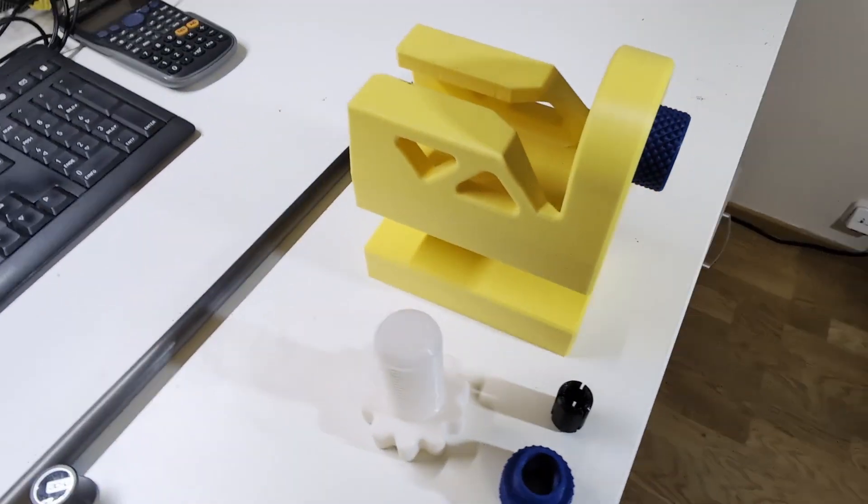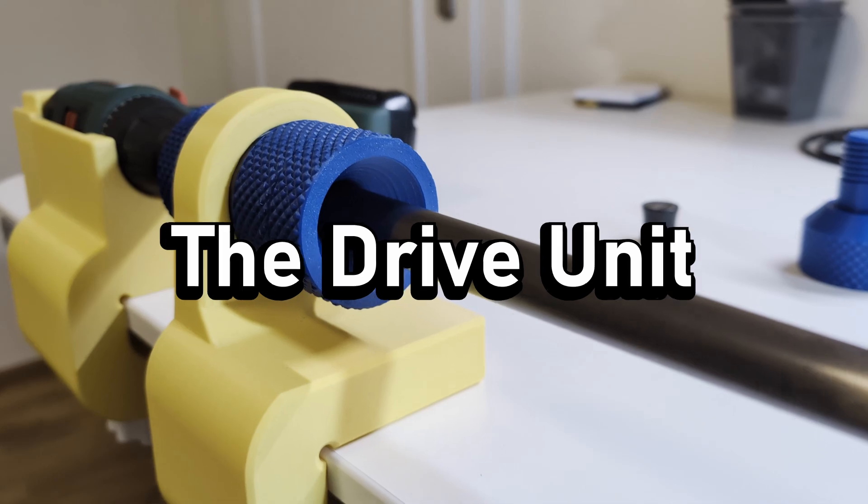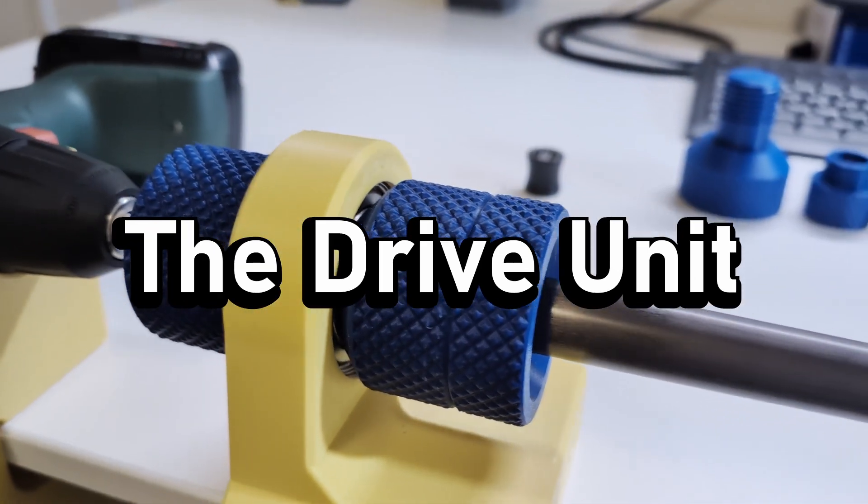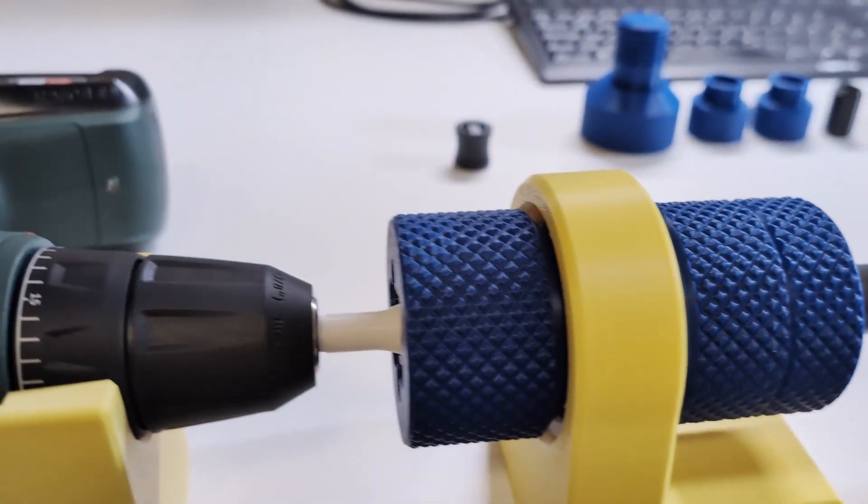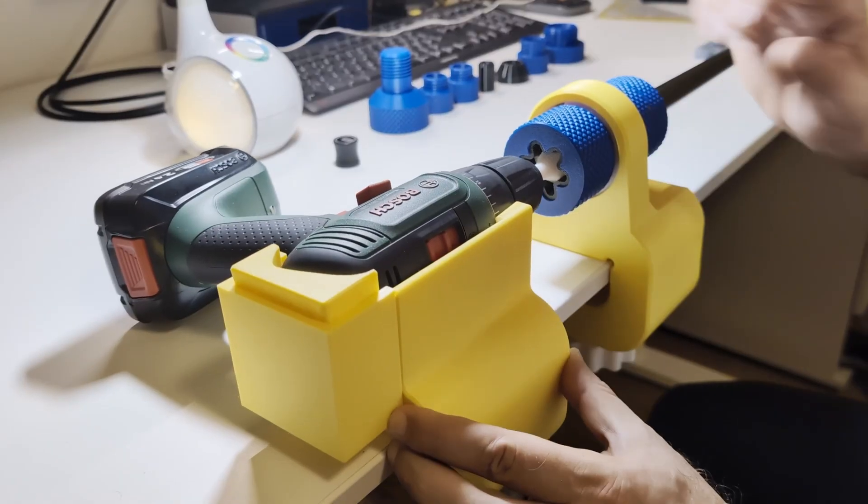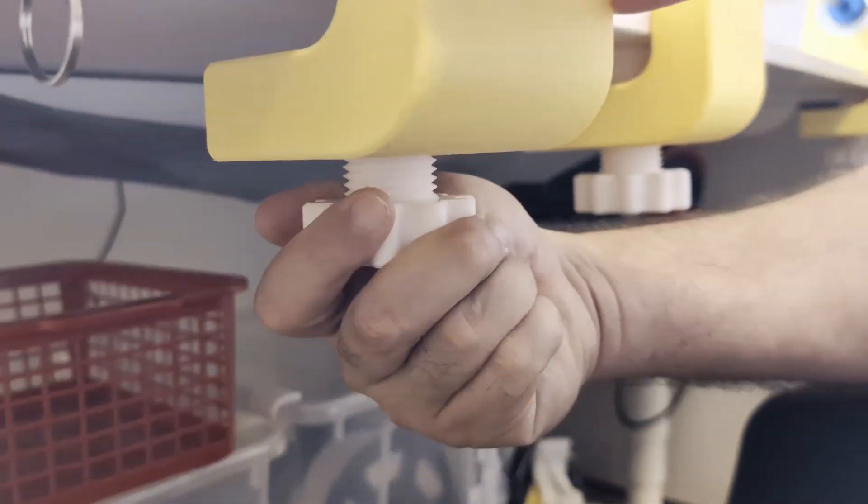The whole lathe is made of just three modules. The drive unit clamps right onto any regular table, guided neatly by the edge and locked down with a set screw.